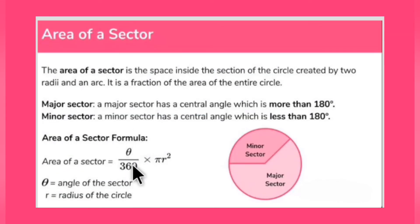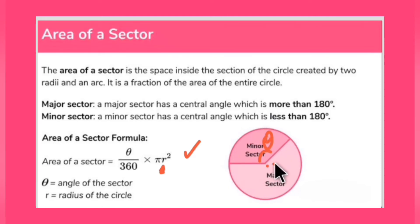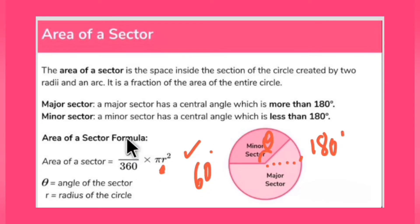The formula to calculate the area of a sector is: Area = (θ/360) × πr². For a minor arc, the theta value will always be less than 180°, and for a major arc it will be more than 180°. For example, if a minor sector has 60°, you substitute 60/360 × πr² with the given radius to get the area of that sector.